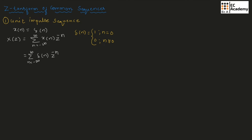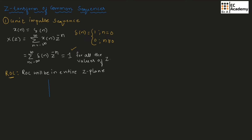We have only one value for delta of n, which is 1 at n equal to 0. So this summation value will be equal to 1 for all values of Z. Now let us find the ROC for this sequence. Since we got the Z-transform as 1, the ROC will be in the entire Z-plane, with the real term on the X-axis and the imaginary term on the Y-axis.